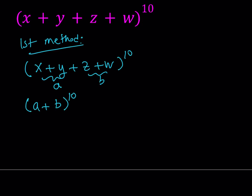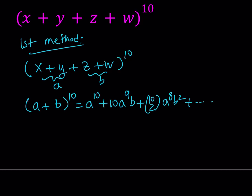Now I have a plus b to the 10th power, which can be written as a to the 10th power plus 10 choose 1, which is 10 times a to the 9th multiplied by b, and then 10 choose 2, a to the 8th, b squared, so on and so forth. And this is just going to end in b to the power 10.